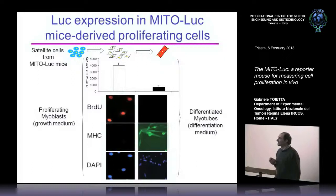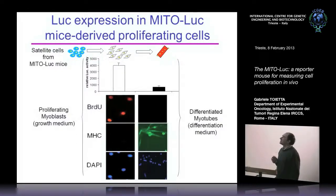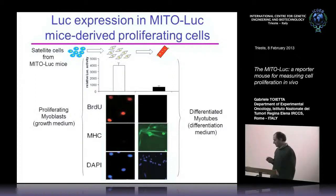There are BrdU-positive signals in proliferating cells. If you induce satellite cells to differentiate into myotubes, you get nice expression of myosin heavy chains — a marker of myotubes — but you don't have BrdU expression and you don't have luciferase expression. So basically, if you induce proliferation of these cells, you get a luciferase signal; if you stop them, you don't.